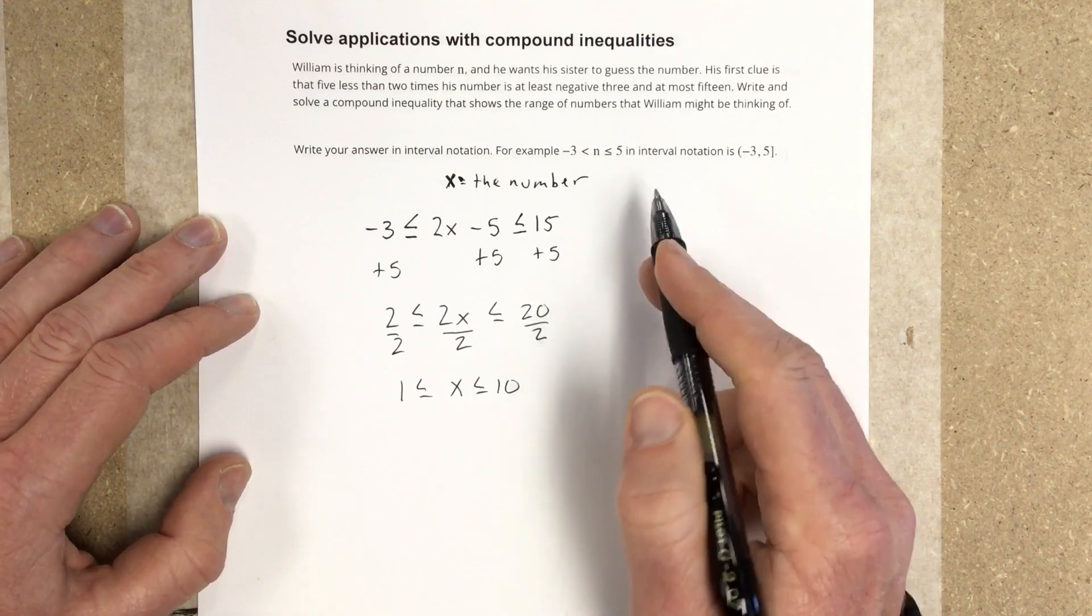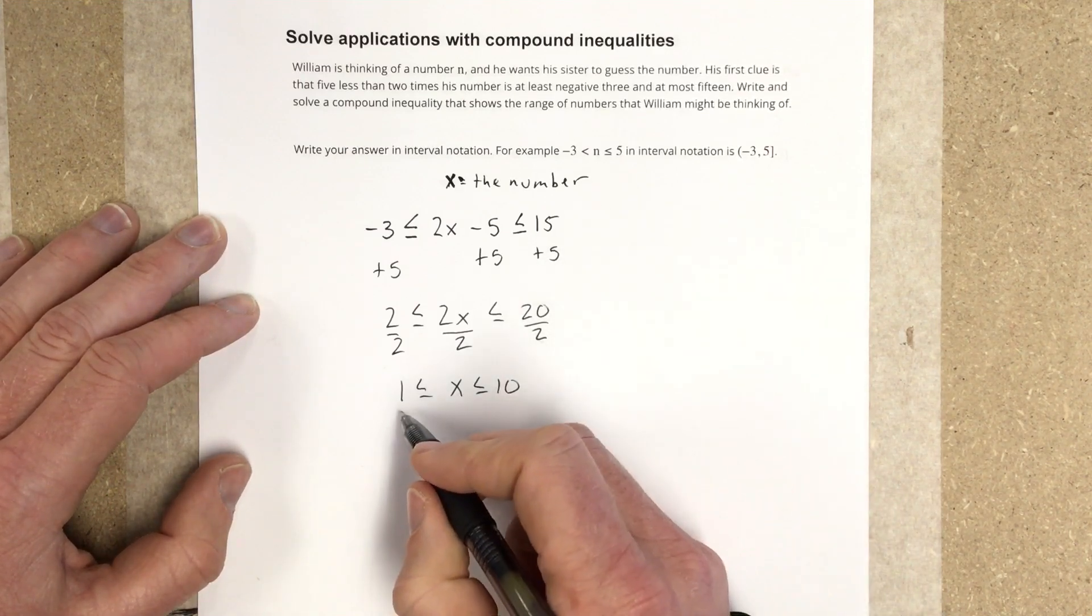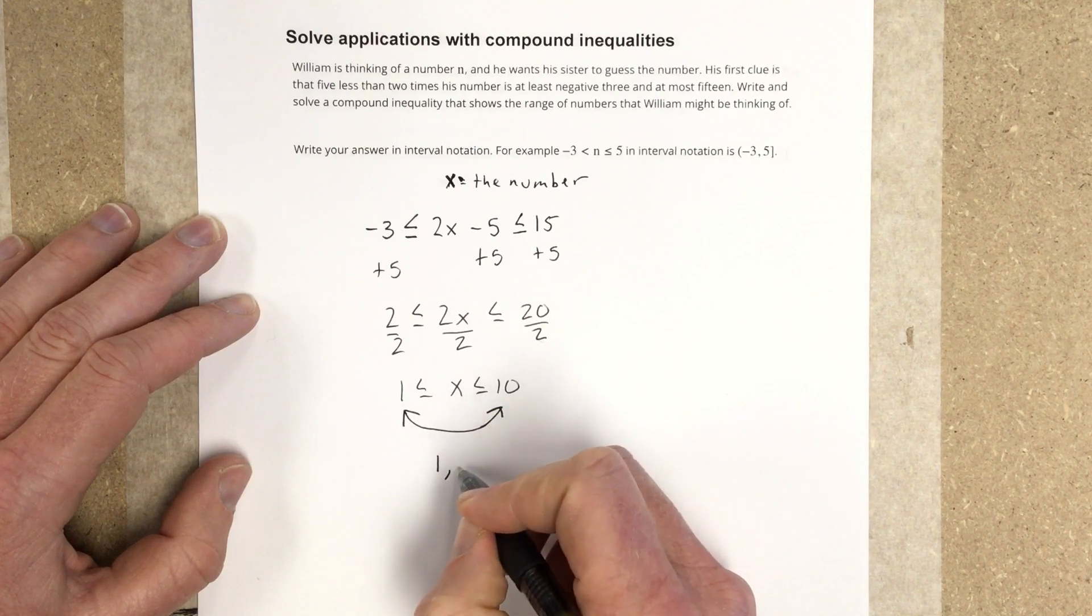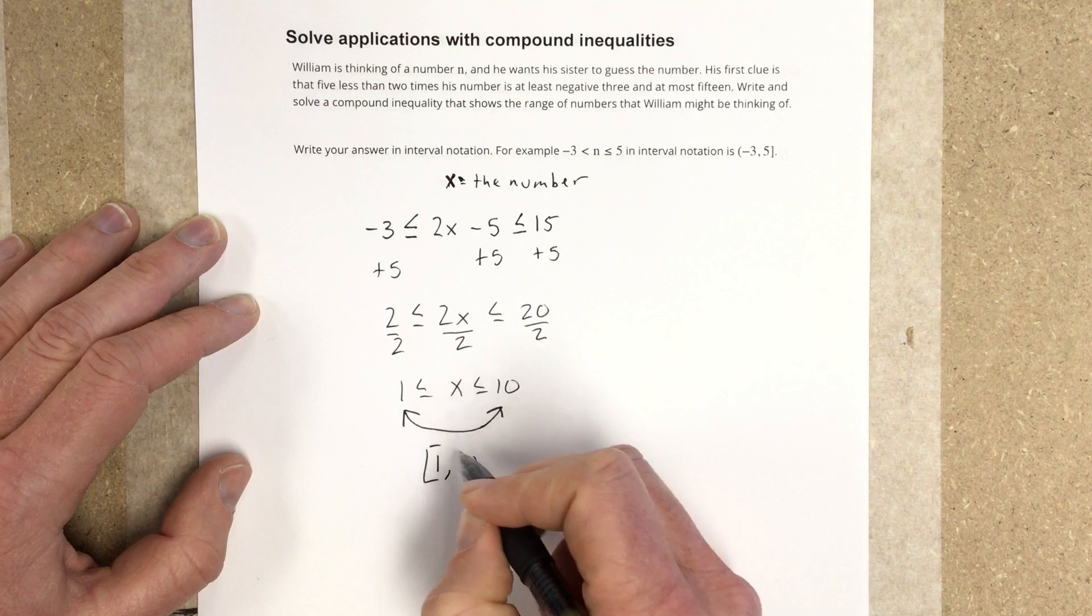So that means the range of numbers he might be thinking of goes from 1 to 10. We can represent that in interval notation as 1 to 10 with a bracket on each.